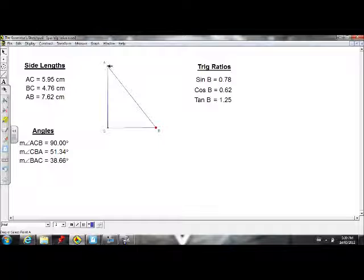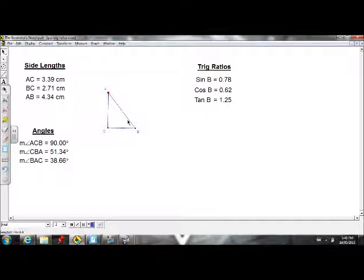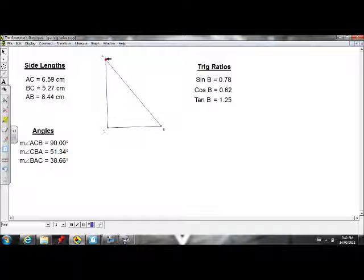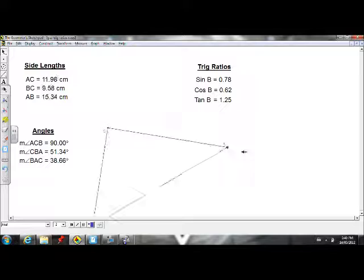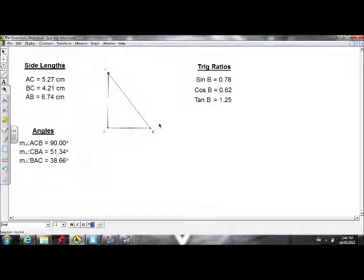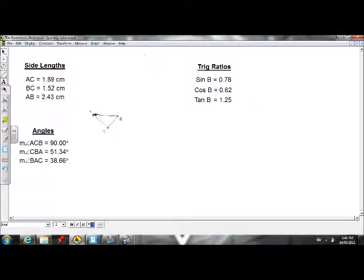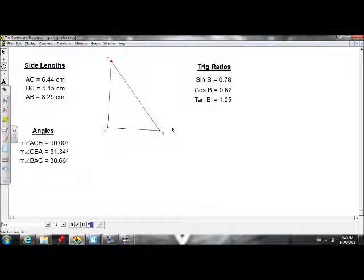But if I only change the size of this triangle and don't affect the angles, I'm not changing the angles, I'm just affecting the size. See, the angles are staying the same. The trig ratios also stay the same. Because for all similar triangles, the trig ratios are the exact same. So no matter what size it is, the trig ratios stay the same as long as the angles are staying the same.